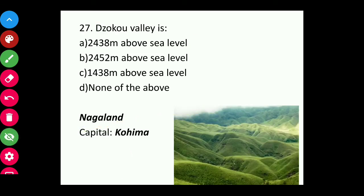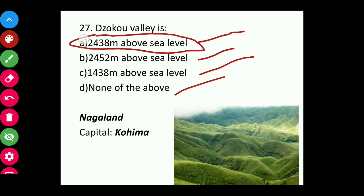Question twenty-seven: Dzukou Valley is at what altitude above sea level — 2,438 meters, 2,452 meters, or 1,438 meters? The answer is 2,438 meters. It is in Nagaland, capital Kohima.